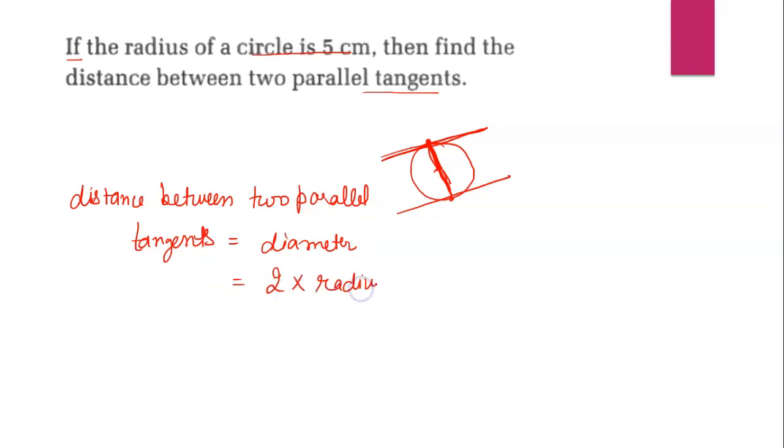Radius is given in the question. So radius is 5 centimeter. So 2 times 5 equals 10, 10 centimeter. The distance between them is 10 centimeter.